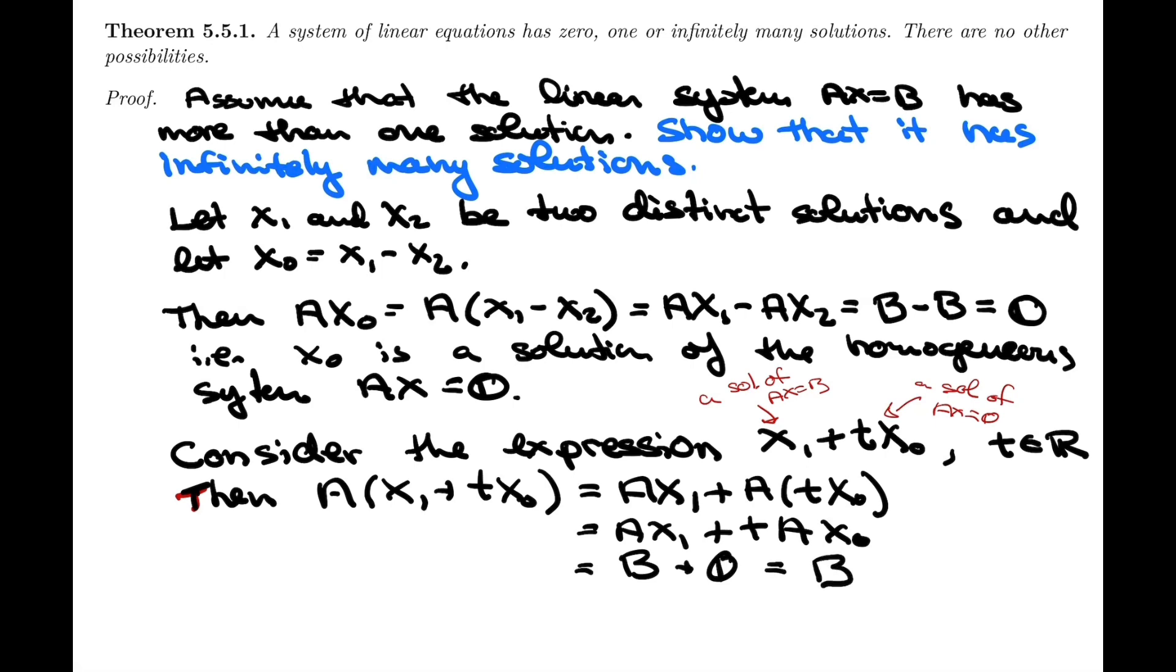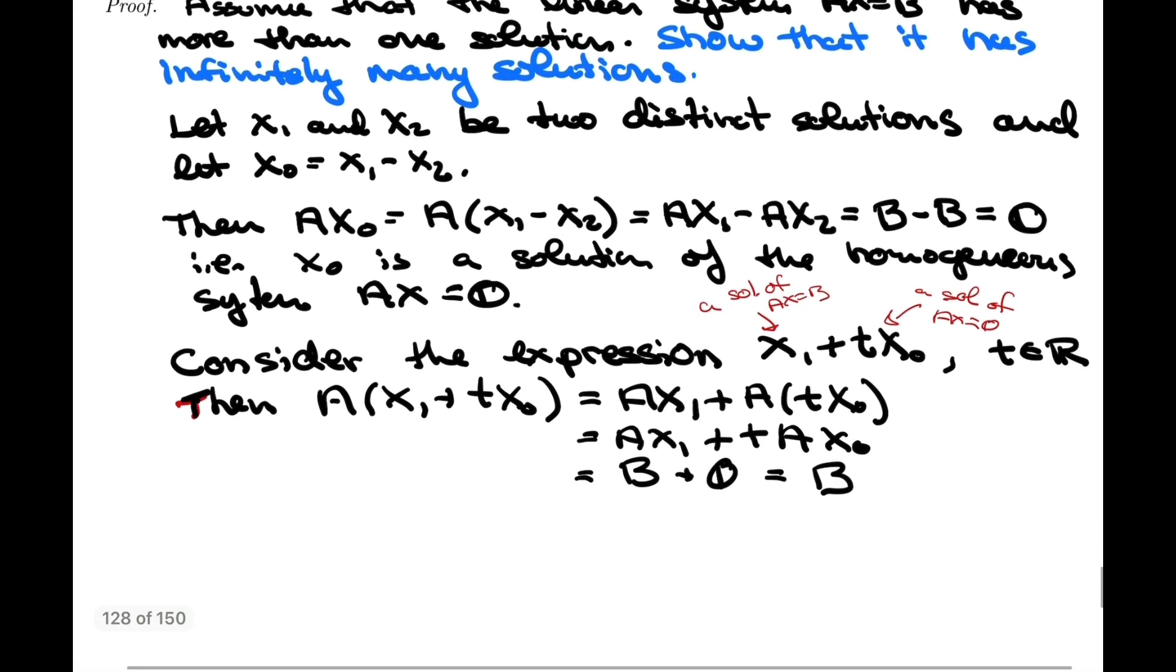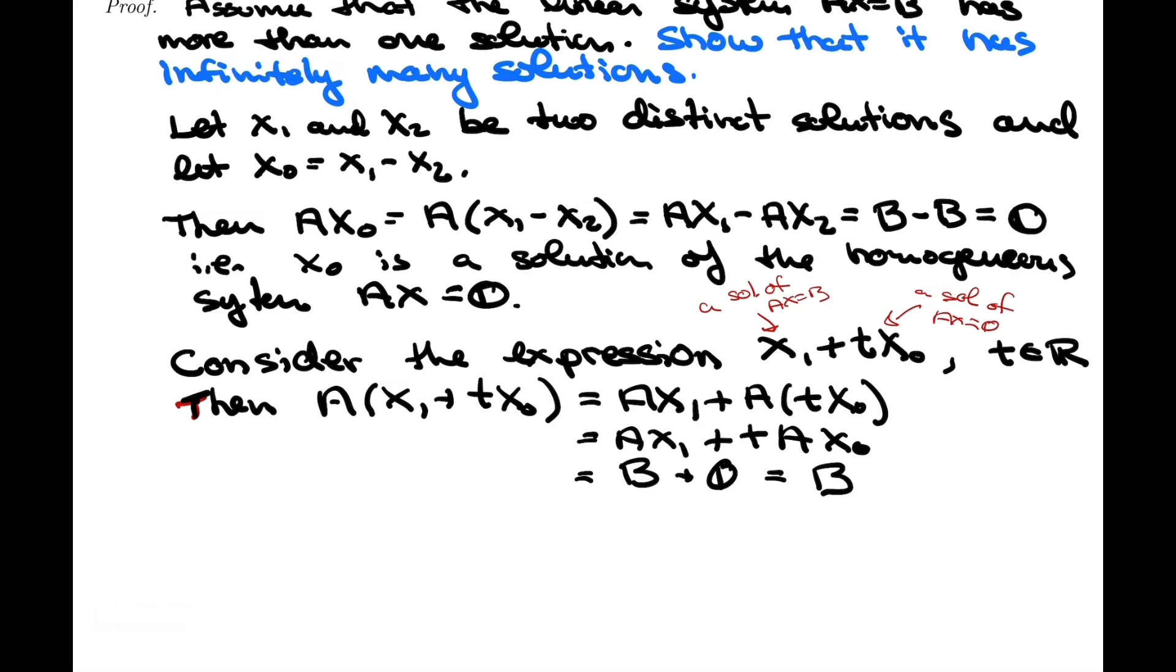we just said, is a solution of the homogeneous system, and so it's the zero matrix. And therefore, this is B plus zero, in other words, B. So what we've just shown, if we take a step back and reread the statement, we've shown that A times this expression, which is the sum of X1 plus a scalar times X0 is equal to B.